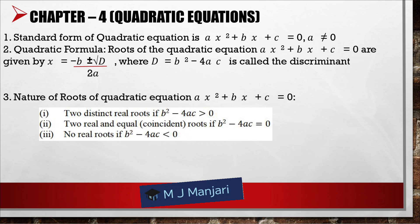Chapter 4: Quadratic Equations. The standard form is AX² plus BX plus C equals 0, where A is not equal to 0. Quadratic formula: the roots are given by X equals minus B plus or minus root D divided by 2A, where D equals B² minus 4AC is called the discriminant. Nature of roots: two distinct real roots if B² minus 4AC is greater than 0; two real and equal roots if B² minus 4AC equals 0; no real roots if B² minus 4AC is less than 0.